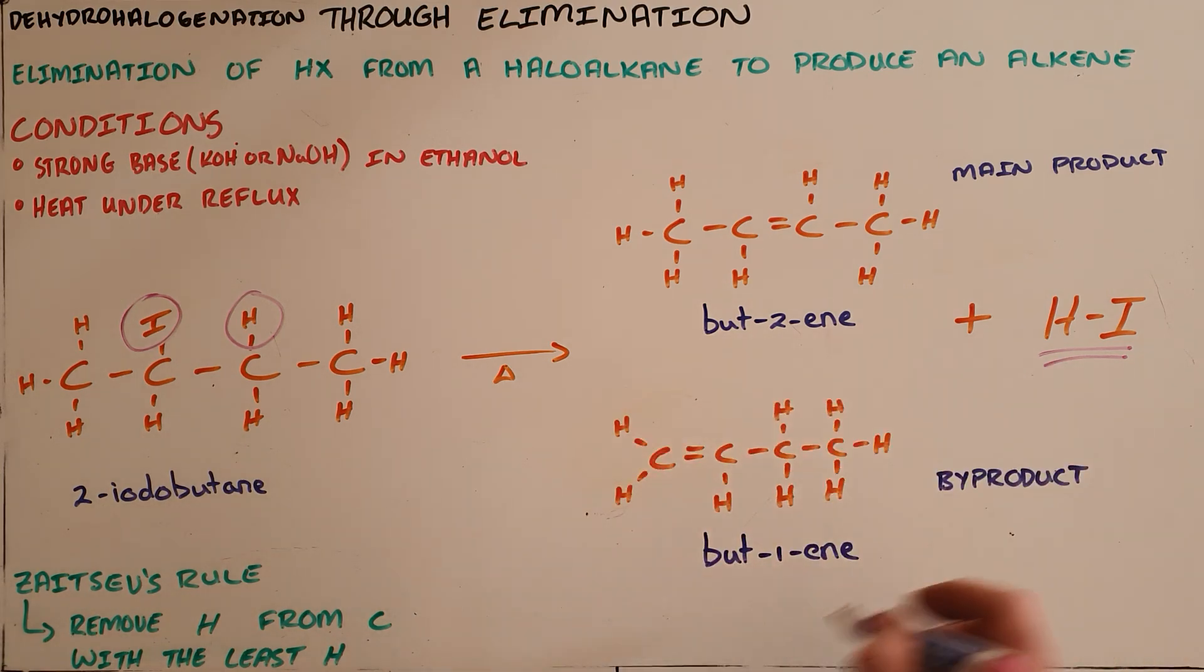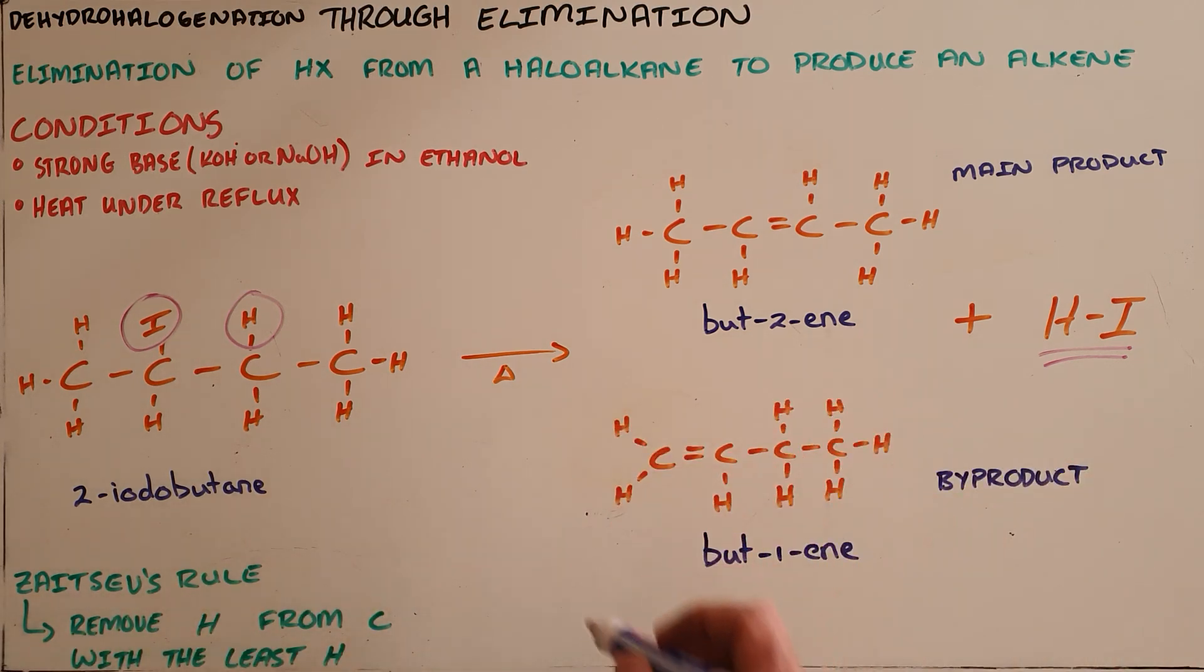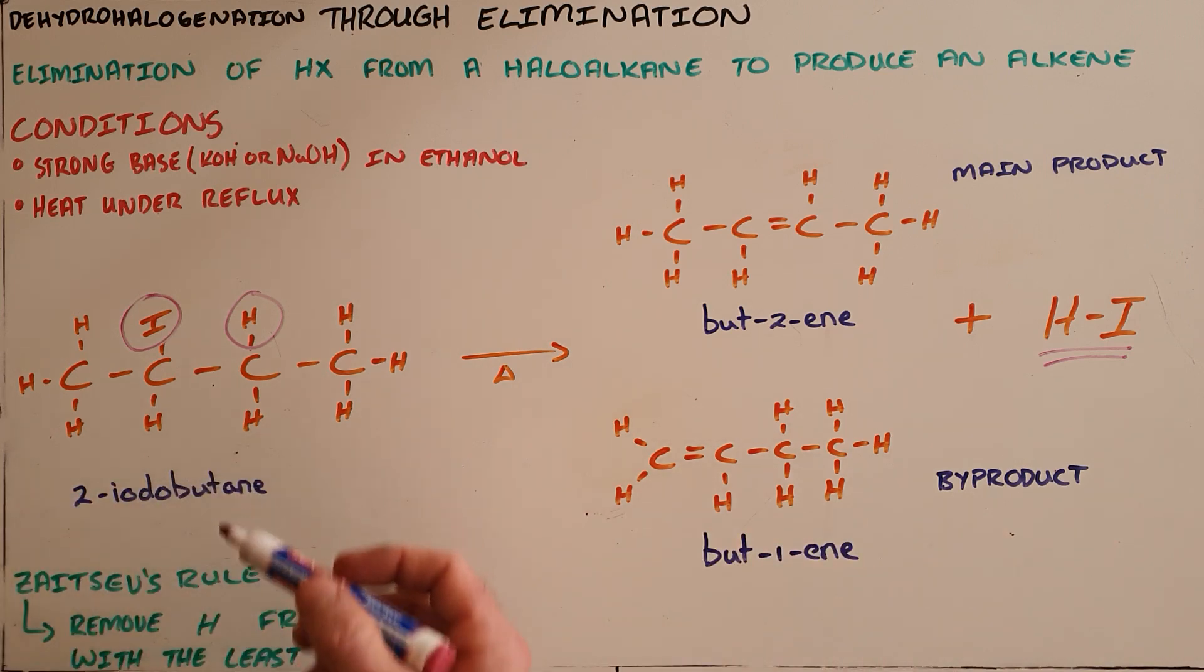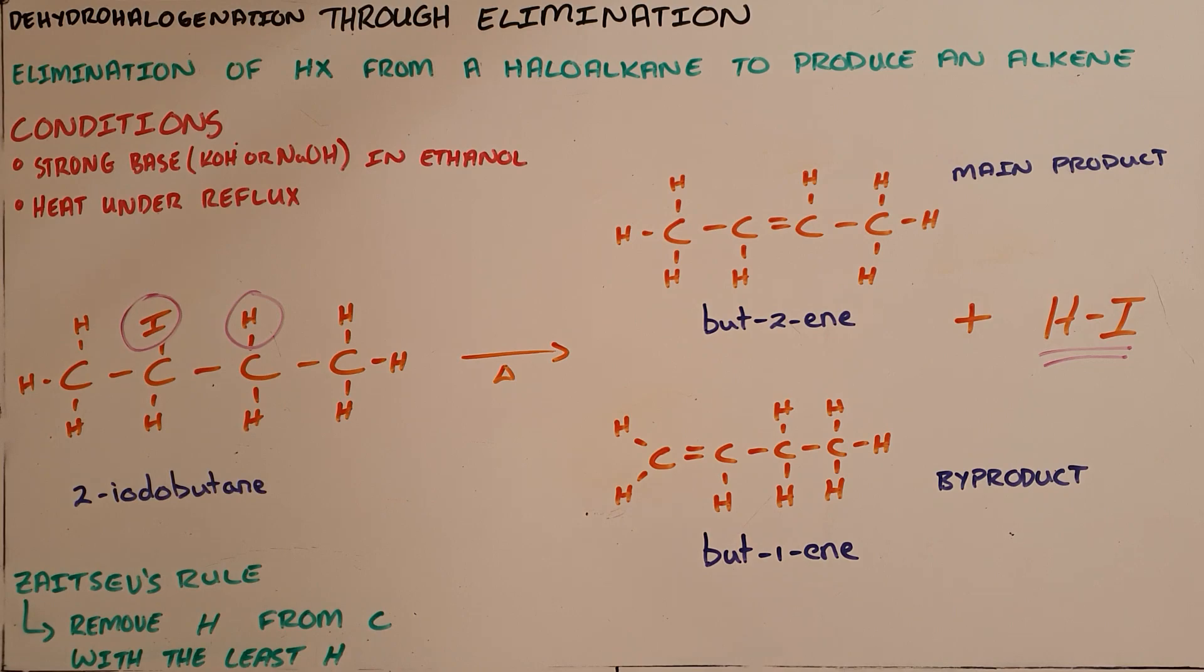A byproduct, one that is formed not by Zaitsev's rule, but-1-ene does exist but happens very rarely. As a result, when we write this equation out, we would write that 2-iodobutane reacts to form but-2-ene and hydrogen iodide. We do not need to specify what the byproduct is.